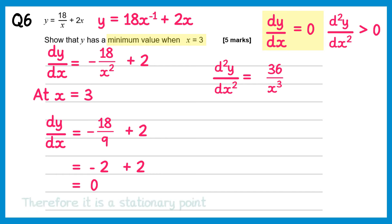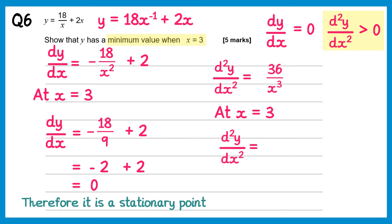We now need to show it's a minimum point. At x equals 3, d²y/dx² equals 36/3³ = 36/27, which simplifies to 4/3. This is positive — it's greater than 0 — therefore it is a minimum point.